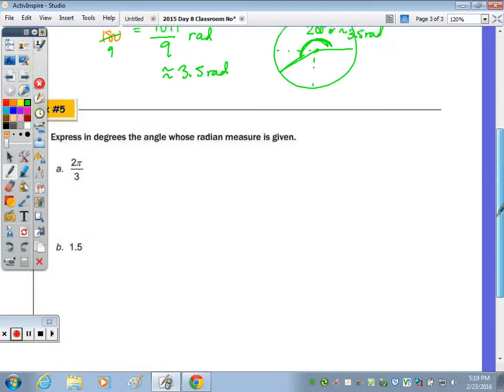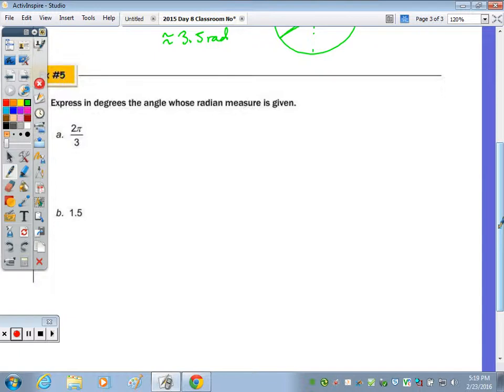And then last, express in degrees. Well, you could do it one of two ways. Since pi is equivalent to 180, you can do a direct substitution, or you can multiply by 180 over pi. Either way, and pi's cancel, you're doing the same thing. So we end up with 360 over 3, which is 120 degrees.